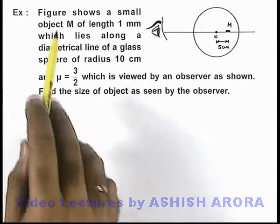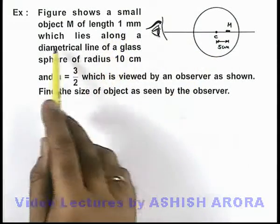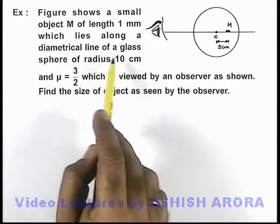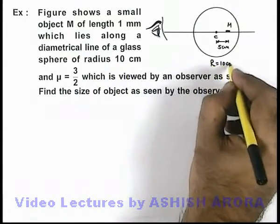In this example, the figure shows a small object M of length 1 millimeter which lies along the diametrical line of a glass sphere of radius 10 centimeter.